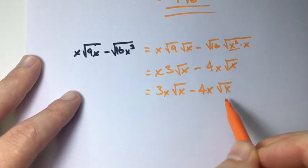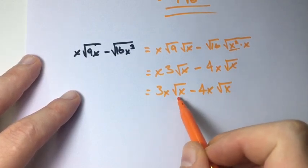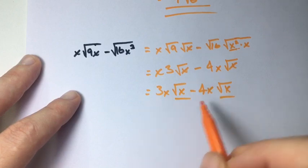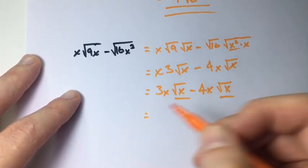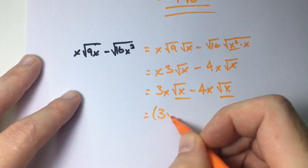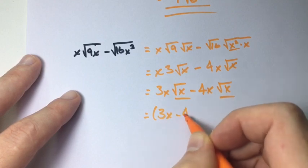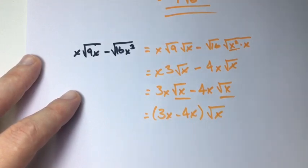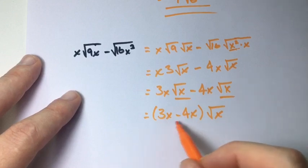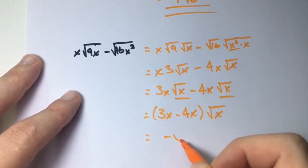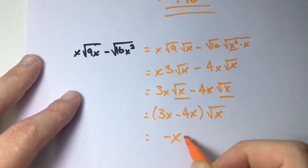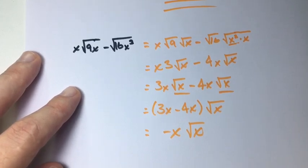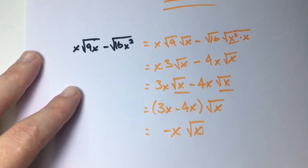We have like radicals now, so we can combine our coefficients. We have 3x minus 4x times the square root of x. 3x minus 4x equals negative x, so the final answer is negative x times the square root of x.